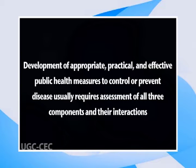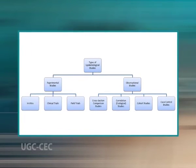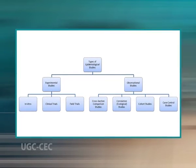Different diseases require different balances and interactions of these three components. Development of appropriate, practical, and effective public health measures to control or prevent disease usually requires assessment of all three components and their interactions. While the results of an epidemiological study may reflect the true effect of an exposure on the development of the outcome under investigation, it should always be considered that the findings may be due to an alternative explanation. Such alternative explanations may be due to chance — that is random error — bias, or confounding, which may produce spurious results.